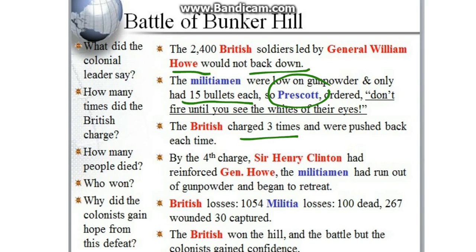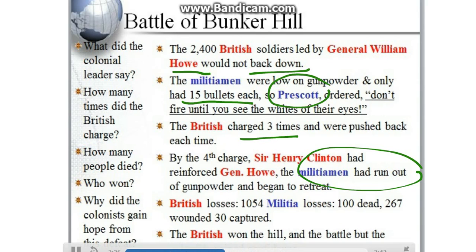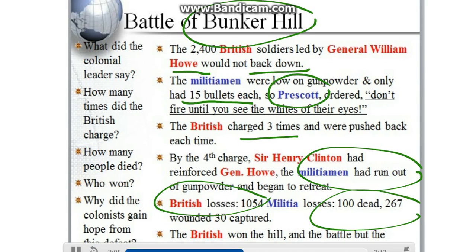By the fourth charge, Sir Henry Clinton had reinforced General Howe, and the militiamen had run out of gunpowder and ammunition and began to retreat. This is basically a British win. The British won the hill and the battle, but the colonists gained confidence. The British took tremendous losses, losing over a thousand soldiers, while the militia lost about 450 men. This battle is actually misnamed — it was not fought on Bunker Hill but on Breeds Hill, which was right next to Bunker Hill.